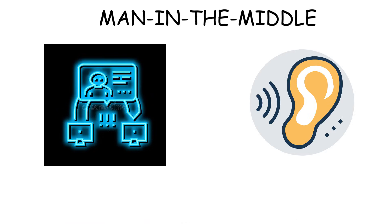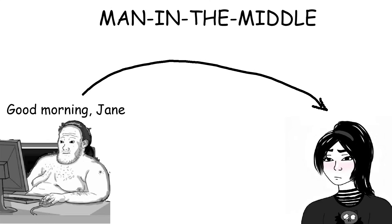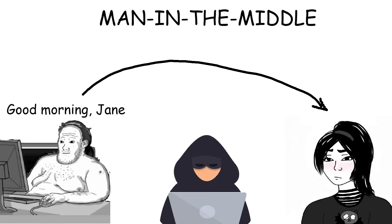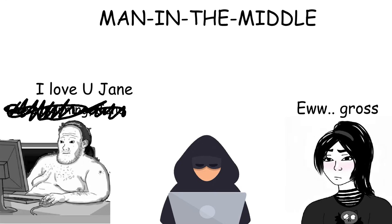Man in the middle. Man in the middle is like eavesdropping, but instead of just listening, the hacker can also change what's being said. Imagine you send a harmless text to someone you know, but the hacker intercepts your message and changes it, so the recipient gets the edited message instead.